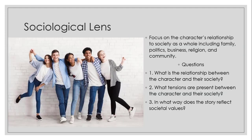Sociological Lens. This is where we focus on a character's relationship to society as a whole, including family, politics, business, religion, and community. Questions that we will ask are: What is the relationship between a character and their society? What tensions are present between a character and their society? And in what way does the story reflect societal values? Here we see the character and society have great tension. Mary brought a lamb to school — it created tension in her school, between her and the teacher, between her and her classmates, and a personal internal tension as she waited inside, doing what she needed to do for school, knowing that her beloved pet was outside. She most likely worried the entire day. So there are multiple tensions in the story we can analyze using the sociological lens.